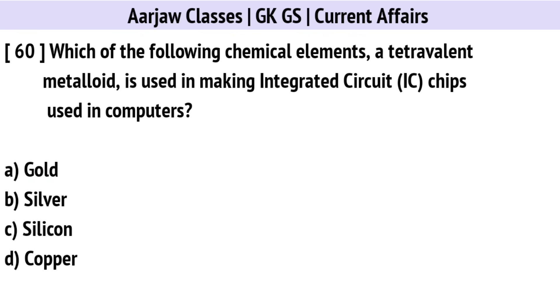Which of the following chemical elements, a tetravalent metalloid, is used in making IC chips used in computers? The correct option is C: Silicon.